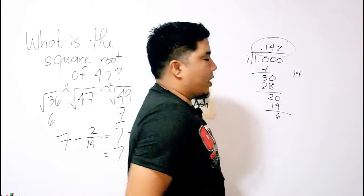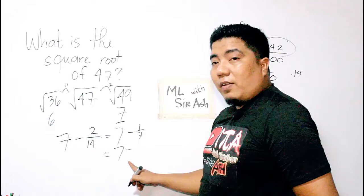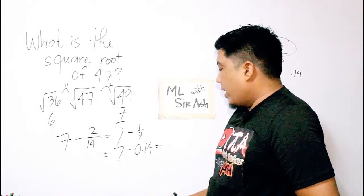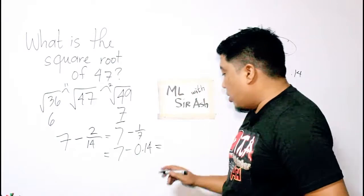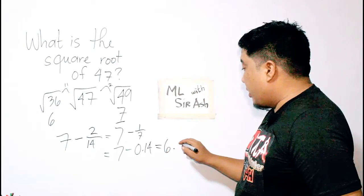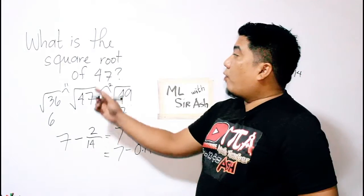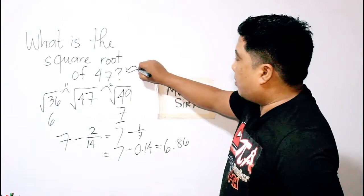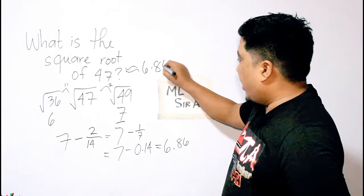So basically, if you round this off, that will give you 0.14. Okay, so 7 will be subtracted to 0.14, and 7 minus 0.14 will give you 6.86. So our answer for the question, what is the square root of 47? That is approximately 6.86. Easy, right?